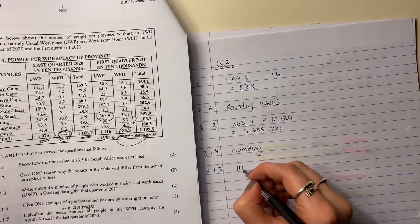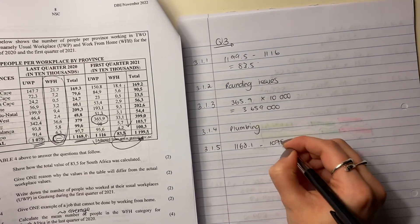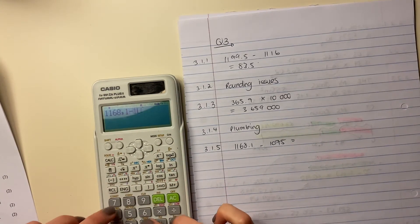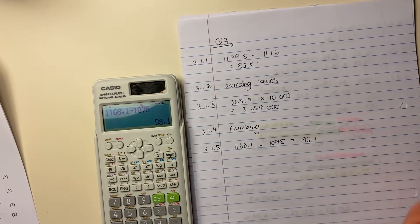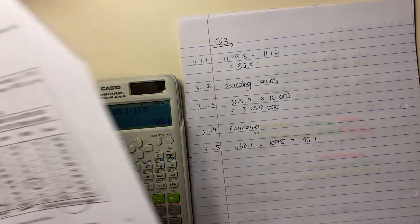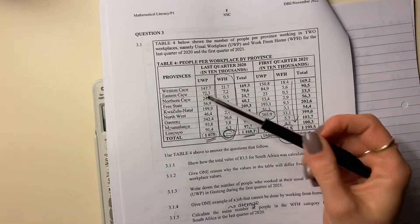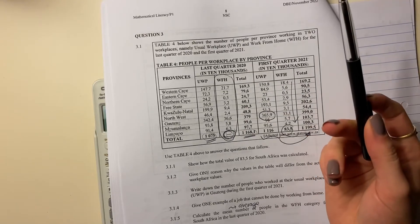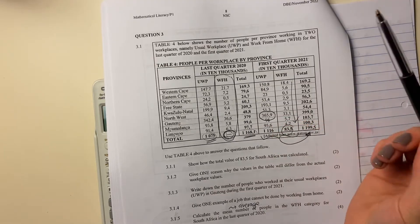The same way that I did question one, I'm now going to do question five the same way. So I'm going to take the total, subtract the usual workplace people, and that leaves me with the work from home people. So what I'm going to do is I'm going to say 1168.1 minus 1075, and I'm going to put that into my calculator. And that is 93.1. But it didn't ask me for just the sum, it asked me for the average. So let's just quickly make sure that there are nine provinces. Let's quickly count here: 1, 2, 3, 4, 5, 6, 7, 8, 9. Perfect.